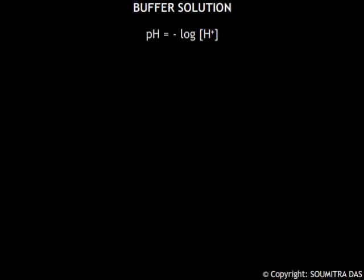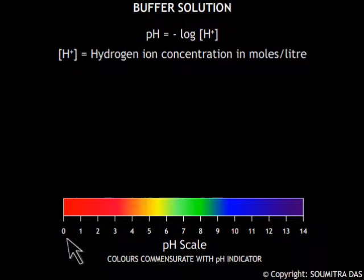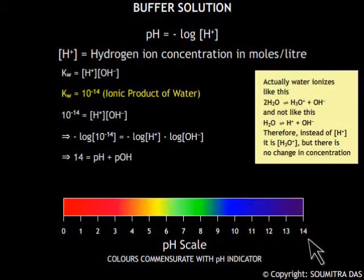First I would like to mention that pH is numerically equal to the negative logarithm of the hydrogen ion concentration in moles per liter of the solution and is measured on a scale ranging from 0 to 14. The hydrogen ion concentration in turn depends on the hydroxyl ion concentration by this equation where Kw is a constant having a value 10 to the power minus 14 and is called the ionic product of water.